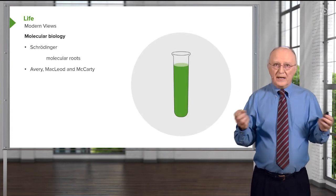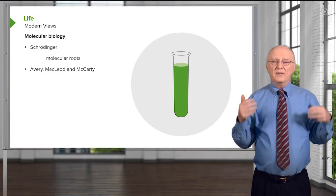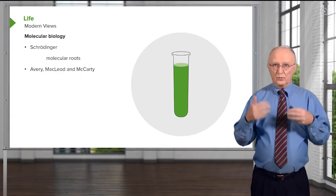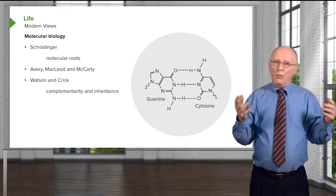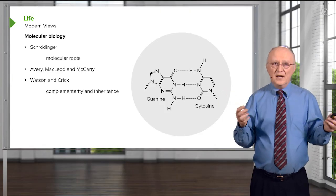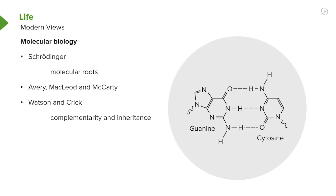Avery, MacLeod, and McCarty in 1944 did a series of experiments that proved definitively, for the first time, that the genetic information being transferred between generations of cells was, in fact, DNA. Only a few years later, in 1953, Watson and Crick, standing on the shoulders of giants and borrowing the data of Rosalind Franklin, were able to show for the first time the structure of DNA. The beautiful double helical molecule with complementary bases inside was a revelation, because people quickly realized how one strand could specify the replication of another strand, and through that replication, genetic information could be transferred identically from one cell to the next generation.